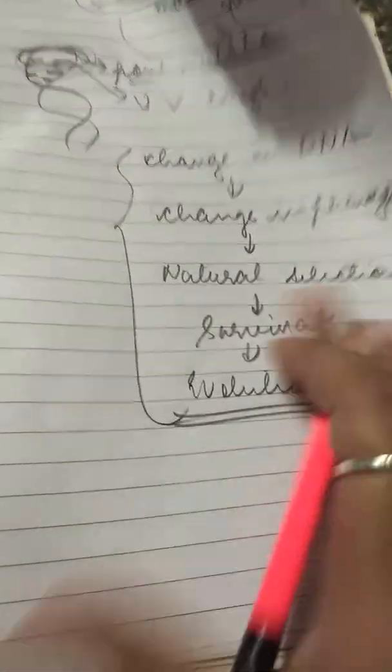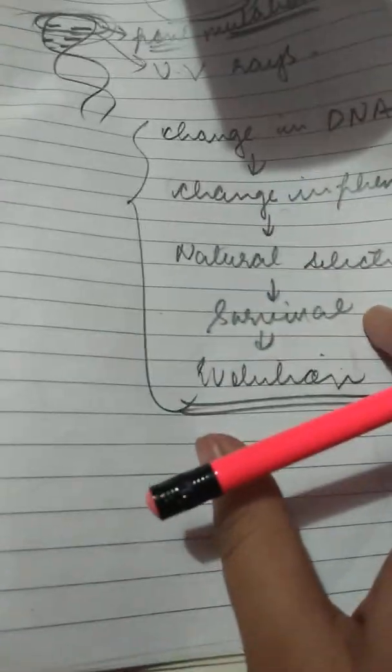That's how evolution occurs. I have told you the theory of evolution as well. Now let us talk about diseases which are caused by mutation. The major disease caused by mutation is sickle cell anemia.